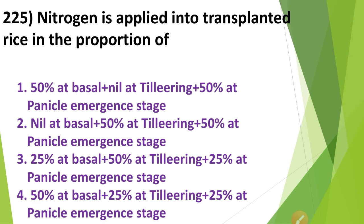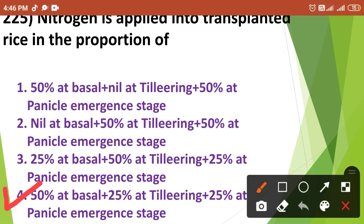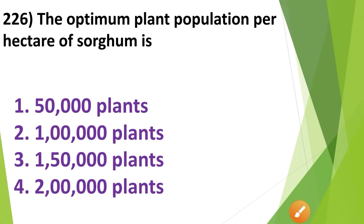Nitrogen is applied in transplanted rice in the proportion of: 1. 50% basal + nil at tillering + 50% at panicle emergence, 2. Nil at basal + 50% at tillering + 50% at panicle emergence, 3. 25% at basal + 50% at tillering + 25% at panicle emergence, 4. 50% at basal + 25% at tillering + 25% at panicle emergence. The correct answer is Option No. 4.